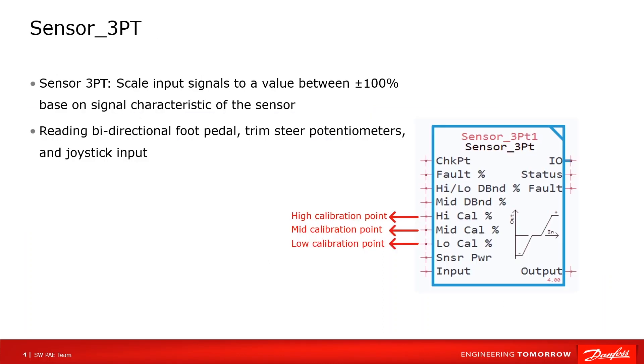Let's start with Sensor_3PT. The function of this block is to convert an original input signal to a percentage value between minus 100% and positive 100% according to the characteristics of input devices. This function block is often used for joysticks and steering.